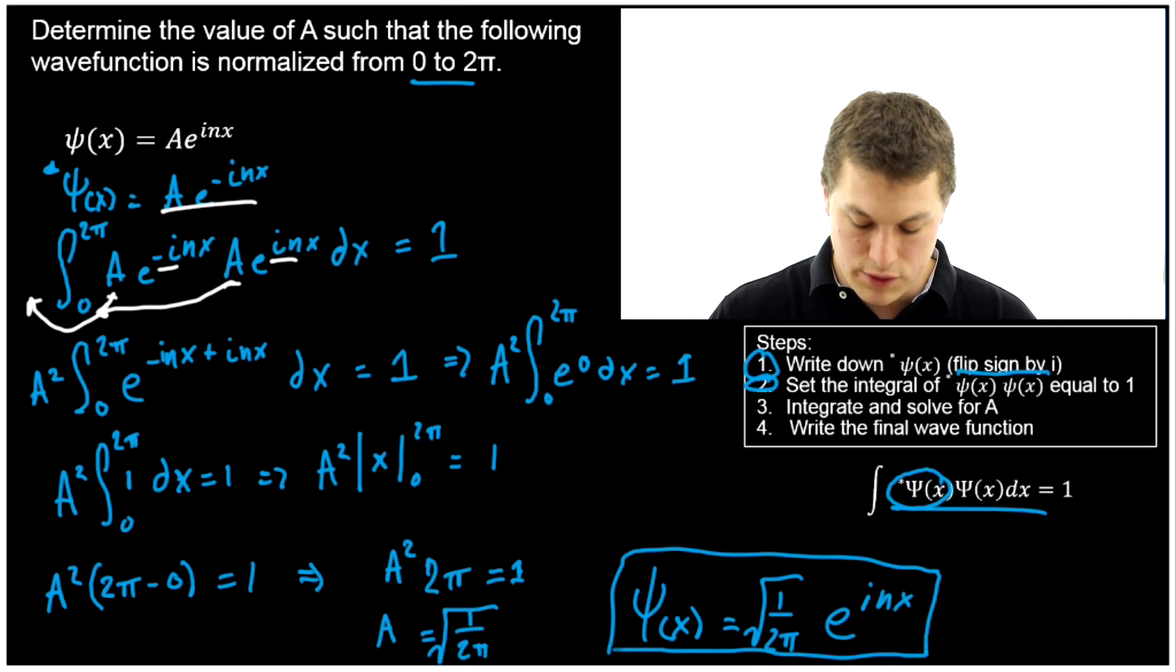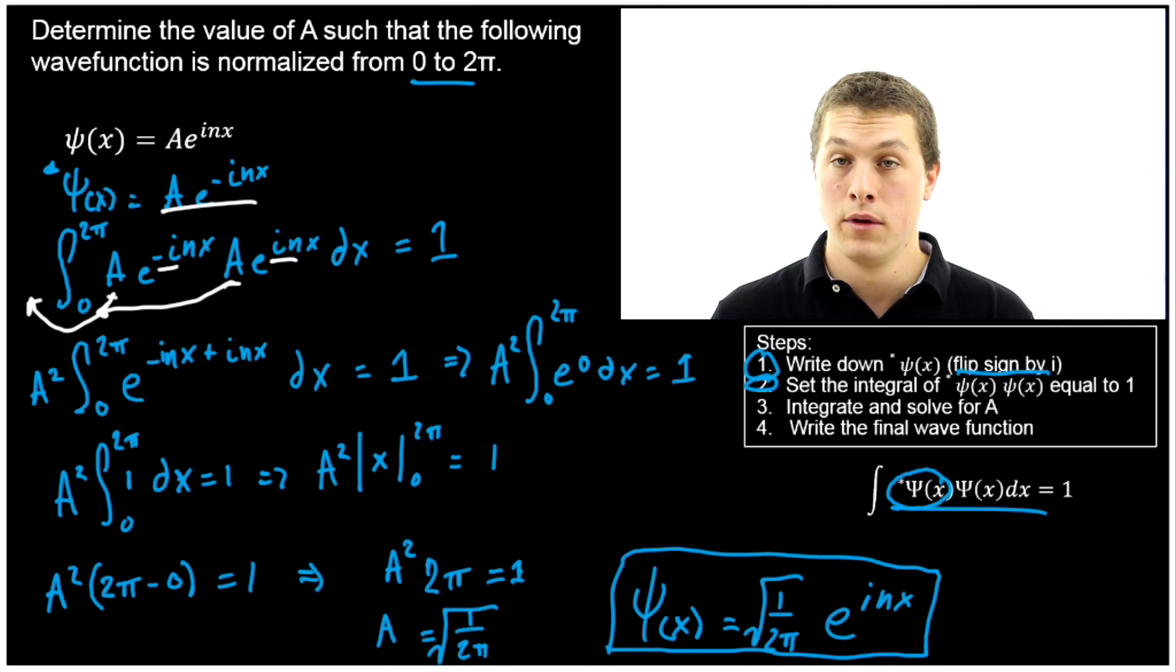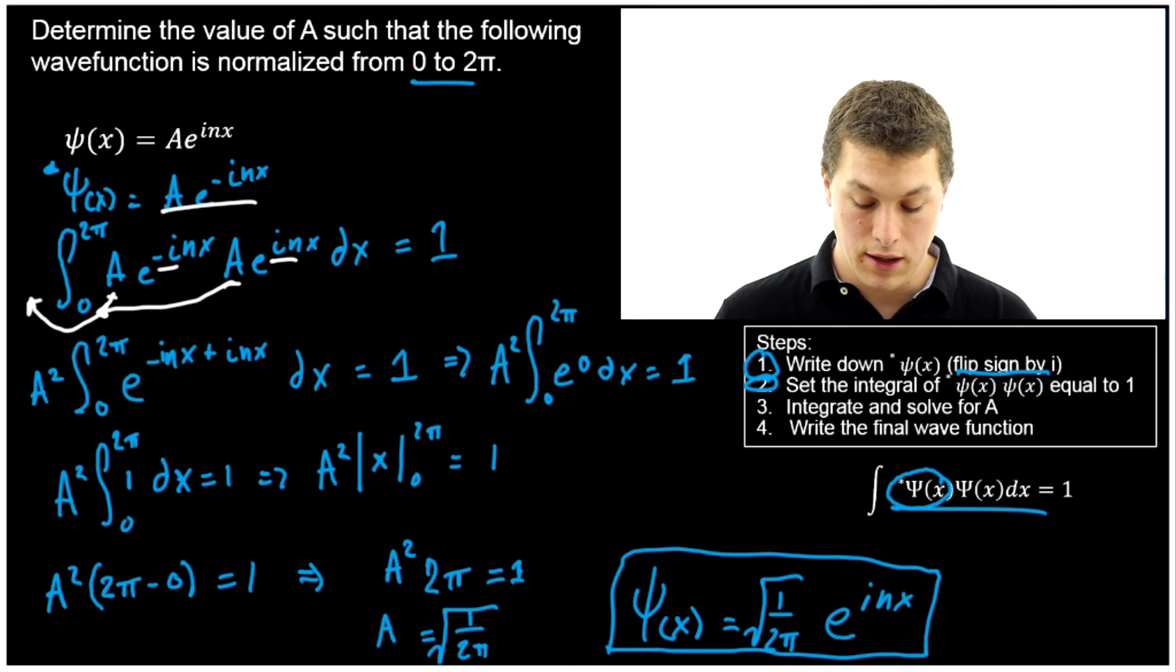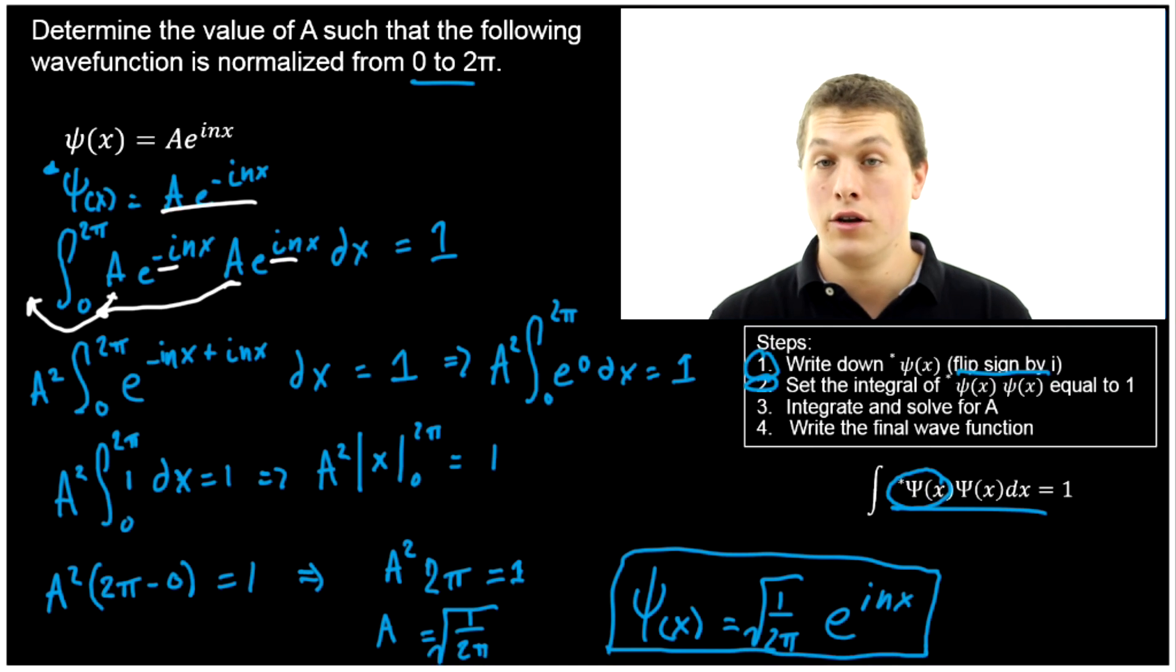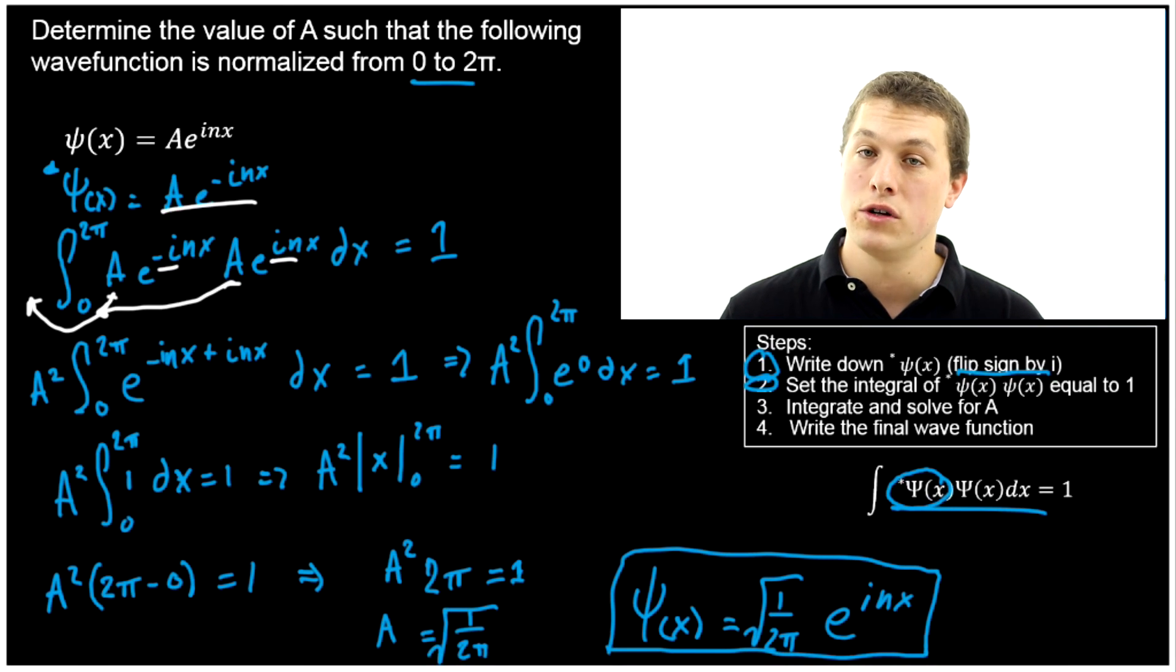That's the wave function you use for every quantum mechanics problem involving the wave function we just defined. So never go back to the un-normalized form. If you're say solving for probability or expectation values or anything, you always want to use the normalized form. That's the correct wave function.